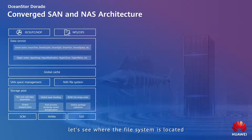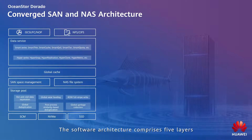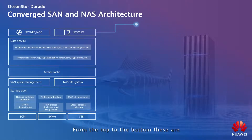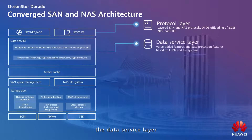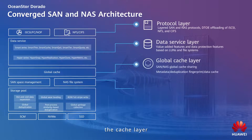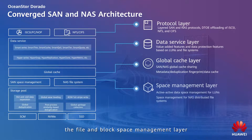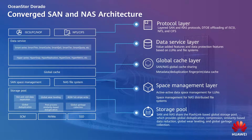First, let's see where the file system is located in the OceanStore Dorado storage architecture. The software architecture comprises five layers. From the top to the bottom, these are the protocol layer, the data service layer, the cache layer, the file and block space management layer, and the storage pool layer.